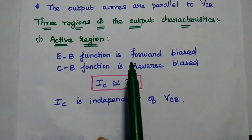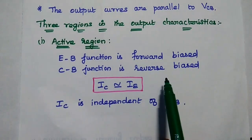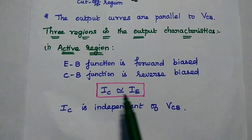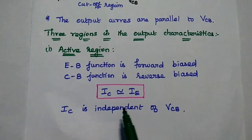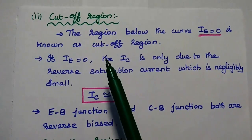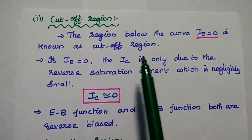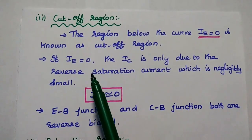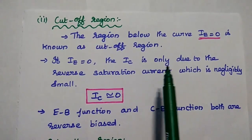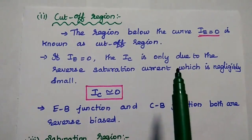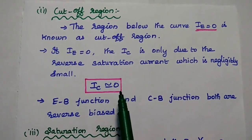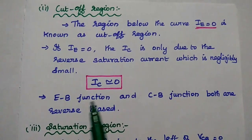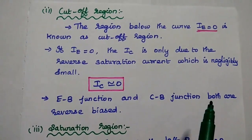In the active region, the emitter-base junction is forward biased and the collector-base junction is reverse biased. Collector current is almost equal to emitter current — output equals input — and it is independent of the output voltage. In the cutoff region, below the curve IE equals zero, the emitter is open and the collector current is only due to the reverse saturation current, which is negligibly small, so the output current is almost zero.